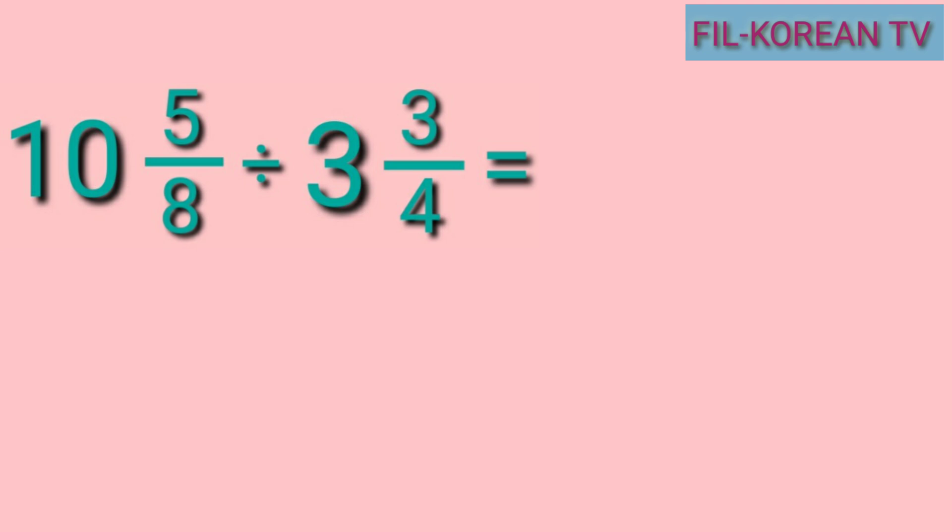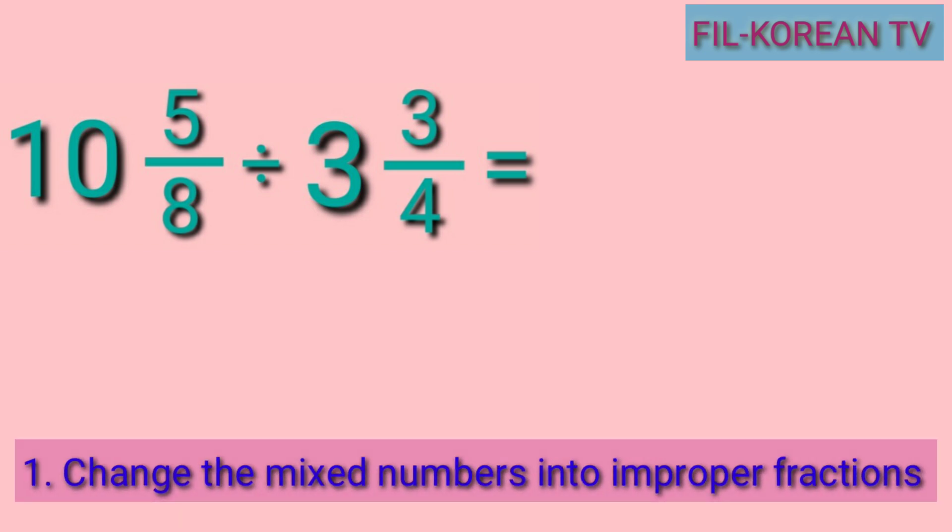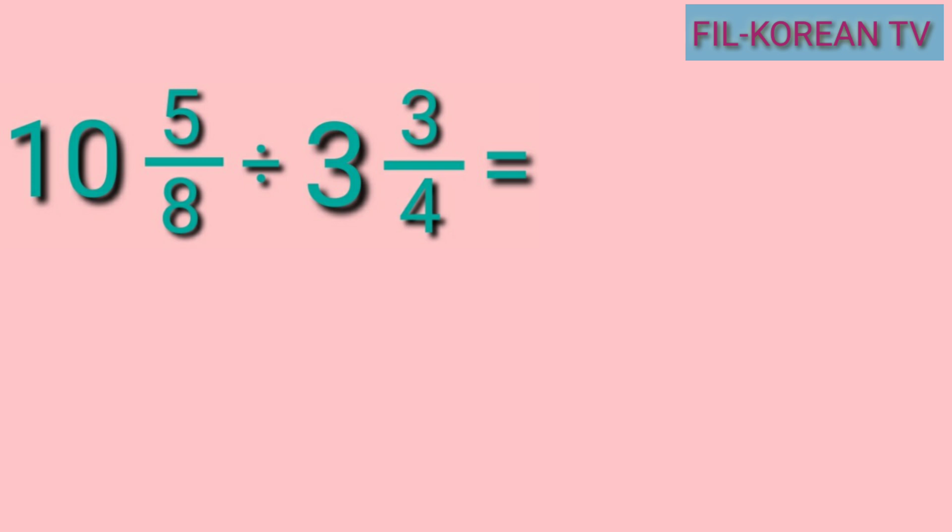The first step is to change the mixed numbers into improper fractions. To change the mixed number into improper fraction, we will multiply the denominator and the whole number, and we will add the numerator to get the new numerator. 8 times 10 equals 80 plus 5 equals 85. So 85 is the new numerator, and then we will copy the denominator 8.